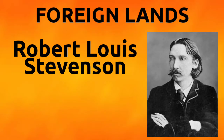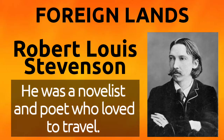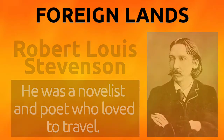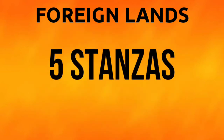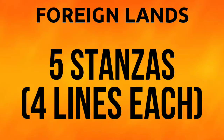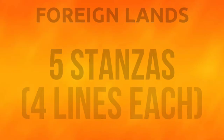Dear students, in today's video I'll be explaining the poem 'Foreign Lands' written by Robert Louis Stevenson. Robert Louis Stevenson was a novelist and poet who was also very fond of traveling. In this poem, the poet talks about the dreams of a little child. This poem is divided into five stanzas comprising four lines each.